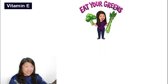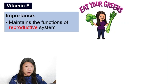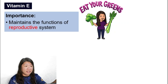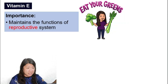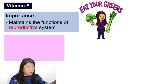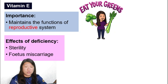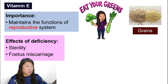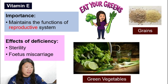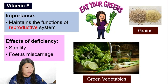Vitamin E is important for maintaining the functions of the reproductive system. A lack of vitamin E can cause sterility and also fetal miscarriage. Sources include grains and green vegetables — so eat your vegetables!